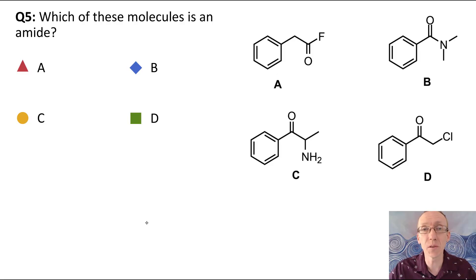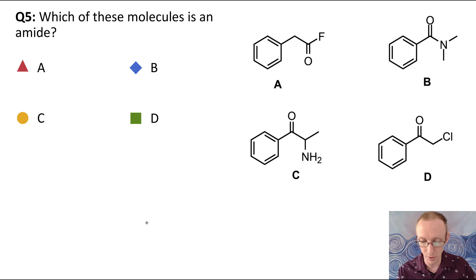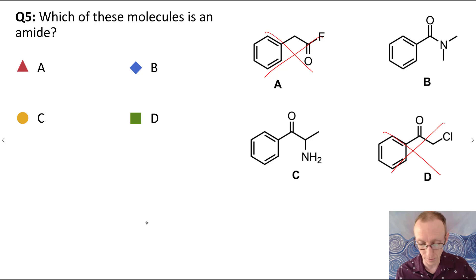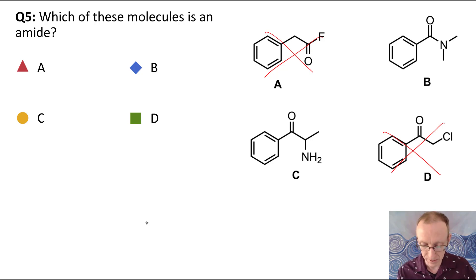Question five: which one of these molecules is an amide? There's a trick in this one as well. We can scratch out the acid halide and the ketone. Now, many people might be tempted to say that C is an amide.